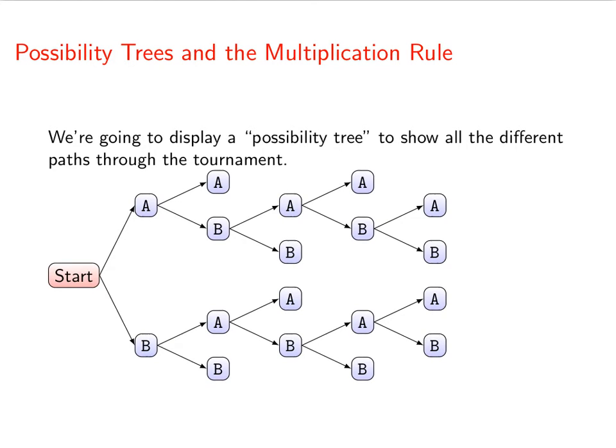Now remember that if you win two games in a row, you win the tournament. So here, for instance, we can start and A wins a game and then A wins another game, that's it, that's the end of the tournament. Or we could start and B wins a game and then A wins two in a row, then it's over.